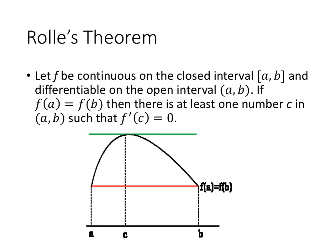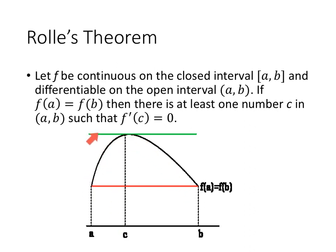So what is Rolle's Theorem? Rolle's Theorem states: let F be continuous on the closed interval from A to B, and differentiable on the open interval from A to B. If F of A equals F of B, then there is at least one number C in the open interval from A to B such that F prime of C equals zero. Our function F is continuous on the closed interval, including the endpoints. The derivative exists everywhere between the endpoints. If F of A equals F of B, then somewhere along the way we have a value C that has a horizontal tangent line — that is, a slope of zero.